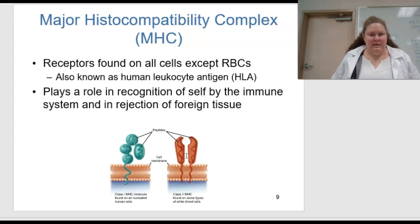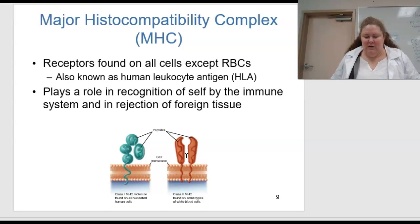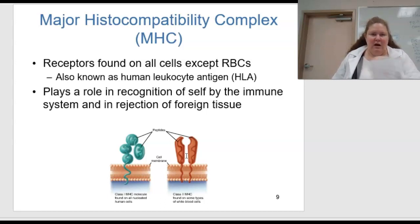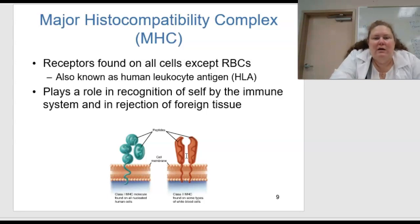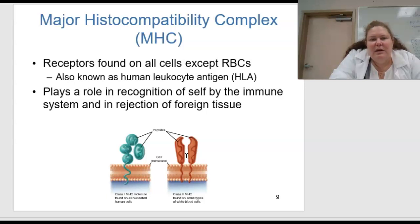Talking specifically about the major histocompatibility complex: these receptors are found on all cells except red blood cells. They are also known as human leukocyte antigens or HLA cells, and they play a role in recognition of self by the immune system and, therefore, in the rejection of foreign tissues.